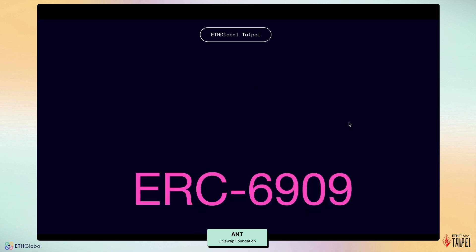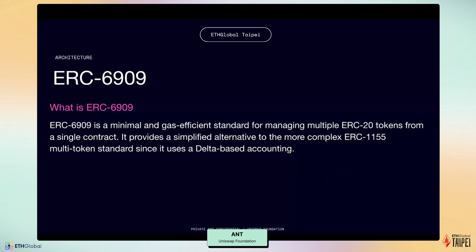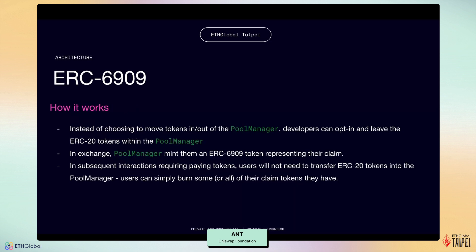One way V4 improves gas efficiency is through the implementation of ERC-6909, a minimal gas efficiency standard for managing multiple ERC-20 tokens from a single contract. It provides a simplified alternative to the more complex ERC-1155 multi-token standard. Instead of moving tokens in and out of the pool manager, developers can opt in to leave ERC-20 tokens within the pool manager contract, and in exchange the pool manager mints an ERC-6909 token representing this claim. In subsequent interactions, users will not need to transfer ERC-20 tokens into the pool manager — instead, they can simply burn some or all of their claim tokens.